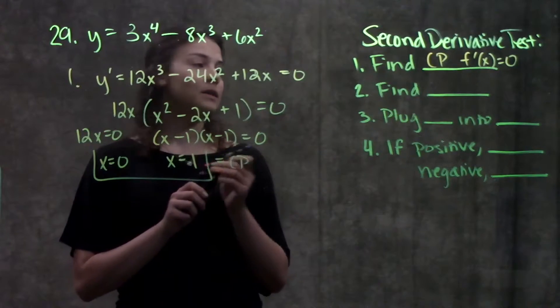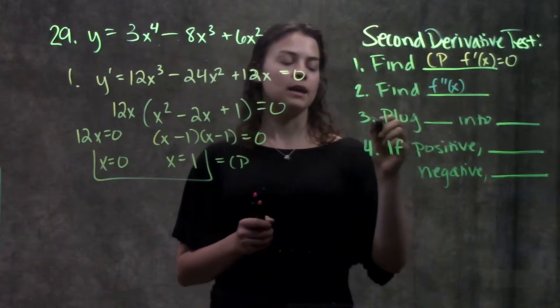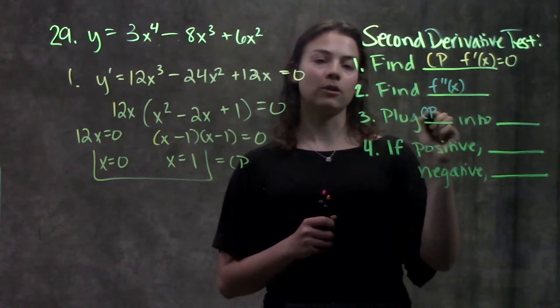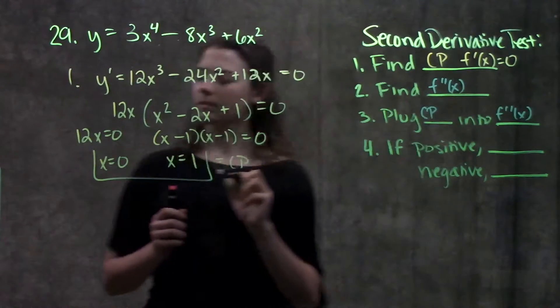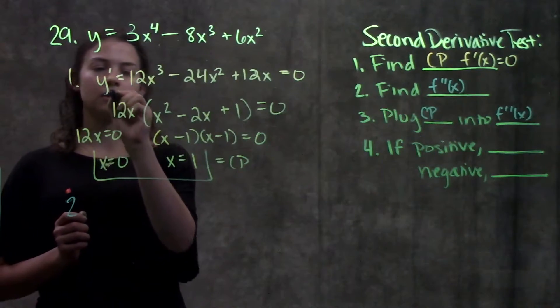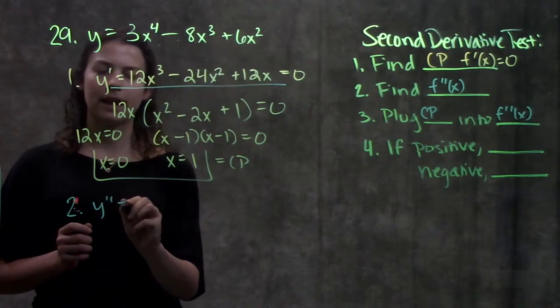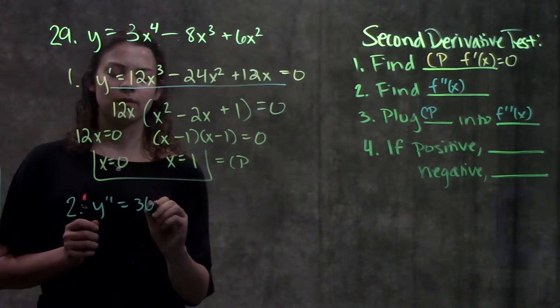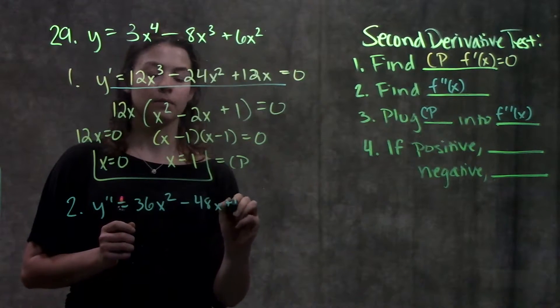Step one is done. Step two, I'm going to find f double prime of x, my second derivative. And with step three, I'm going to plug my critical points into my second derivative and look at the sign. So step two, let's find our second derivative. Just take the derivative of this first derivative, and now we get that our second derivative is 36x squared minus 48x plus 12.